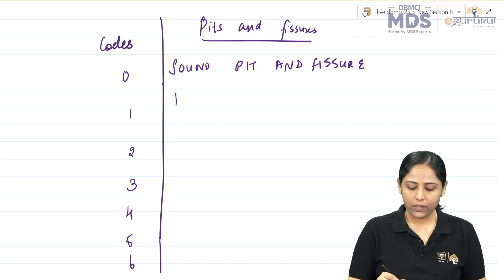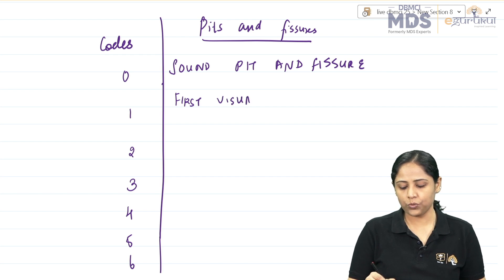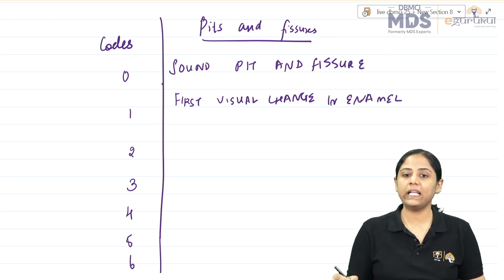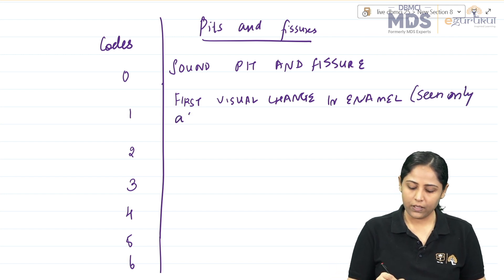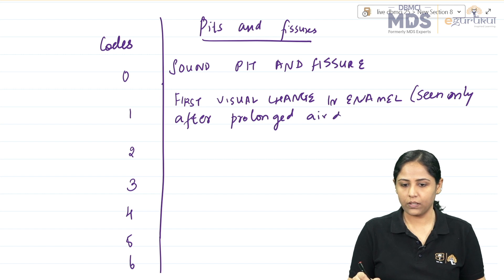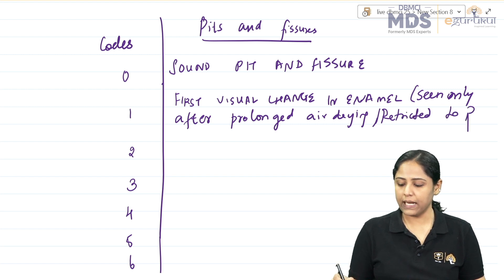Score 1 is first visual change in enamel, seen only after prolonged air drying, or restricted to pit and fissure only.